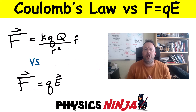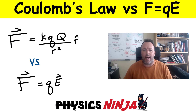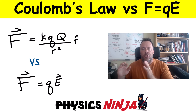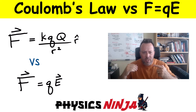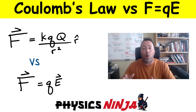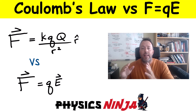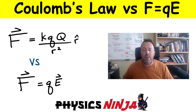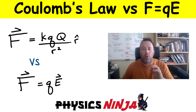Hi everybody, Physics Ninja here. Today I've got a great problem on electrostatics. What I want to do is use Coulomb's law to calculate the force on a charge, and also use this other equation written as force equals the charge multiplied by the electric field at a specific position. We're going to compare both methods, and here's the specific charge distribution I'm looking at.